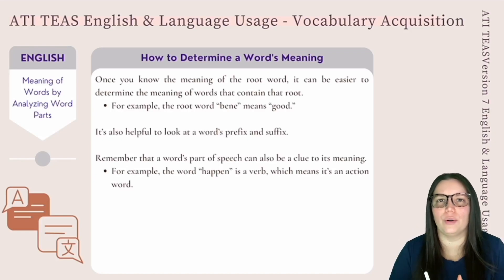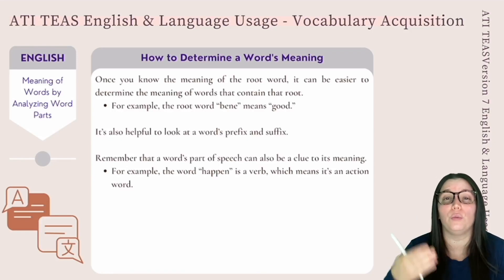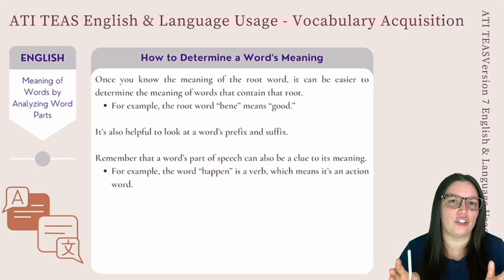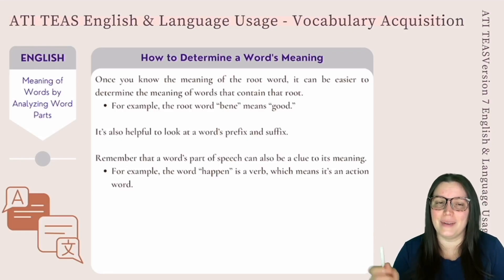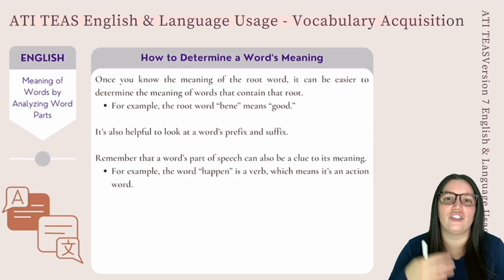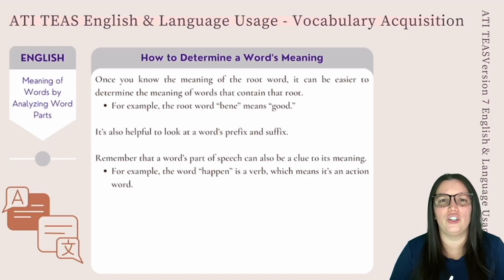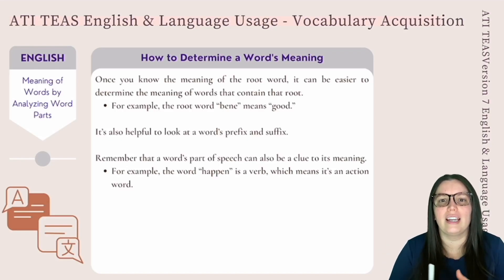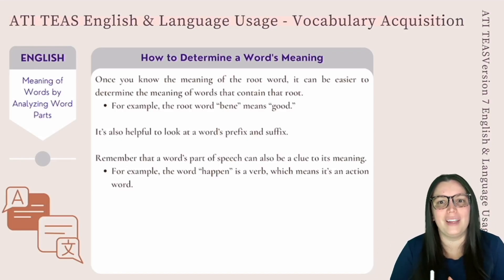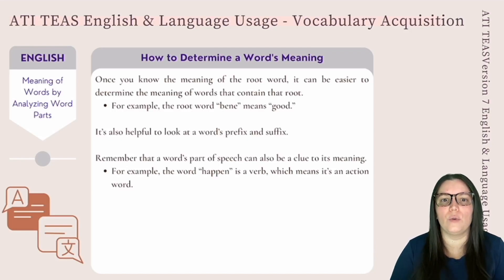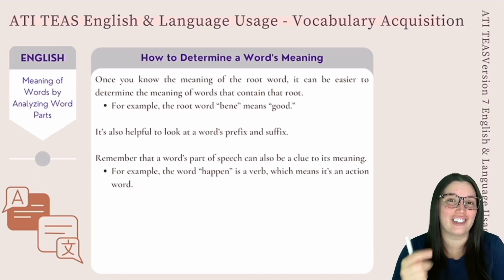How do we determine a word's meaning? Once you understand the meaning of the root word, it becomes much easier to determine the meaning of words containing that root. For example, the root word "bene" means good, so if you see a word like "benefit," you can determine it has a positive connotation. It also helps to know your prefixes and suffixes. Remember that the word's part of speech can be a clue to its meaning — for example, "happen" is a verb, meaning it involves an action.